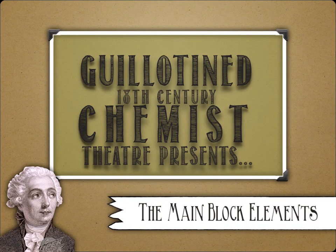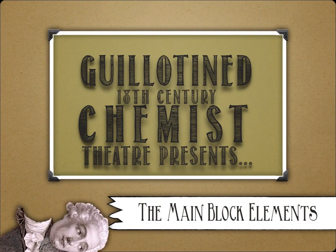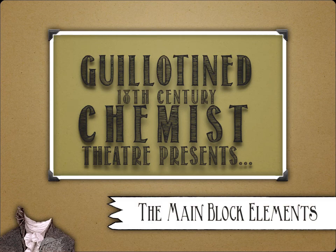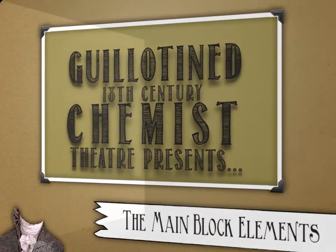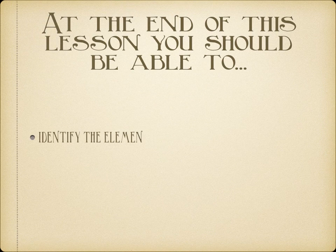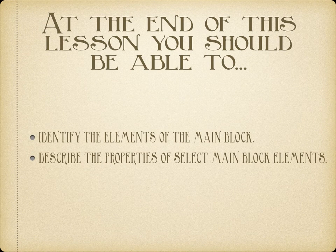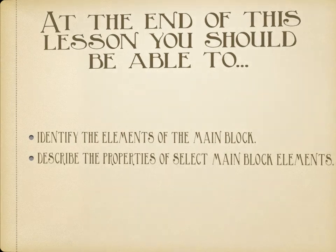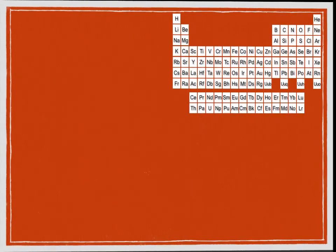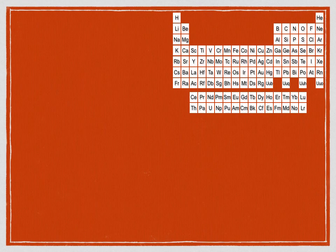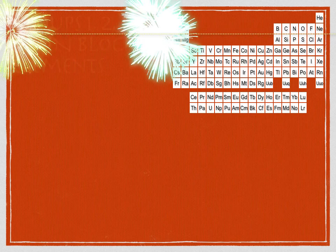Hello, and welcome back to guillotined 18th century chemist theater. Today we are going to attempt to wrap up the periodic table by hitting the main block elements, which is a supergroup composed of not only many of the families we've talked about already, but some that we haven't. There are some really big elements in here, so it's going to be pretty hard to do them justice under ten minutes, but we'll give it a shot.